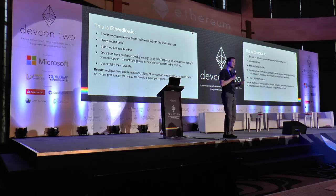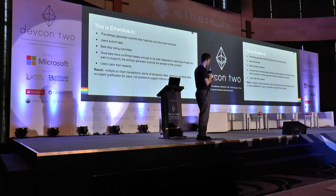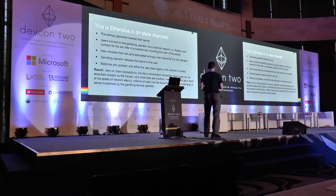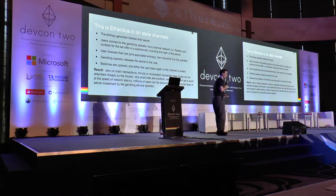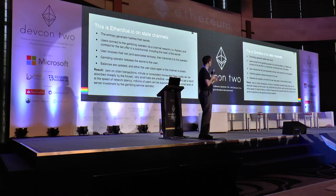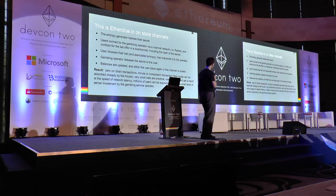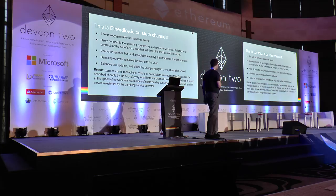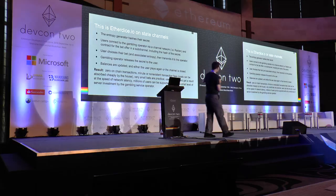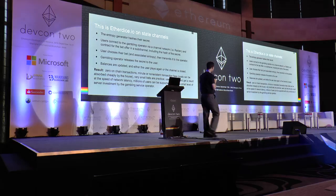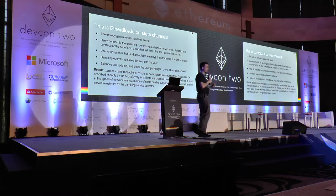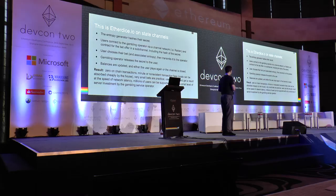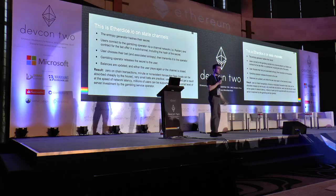Here is EtherDice.io on state channels — a lot of the steps look similar. First, the entropy generator hashes their secret. But now we are not going to go to chain with that. The users are already in a channel network such as Raiden. They connect to the gambling operator through the channels and make a contract for the bet offer in a sub-channel. That bet offer includes the hash of the secret from the gambling operator. The user then selects their bet, decides the amount, generates associated entropy, and transmits it to the operator. After the operator receives the promised bet — guaranteed to receive those funds — the gambling operator can release the secret to the user. The balances are updated with either a win or a loss, and the user can keep playing or the channel is closed. Here's what that user experience looks like: bet — ooh, I lost. Bet — ooh, I lost. Bet — ooh, I won.